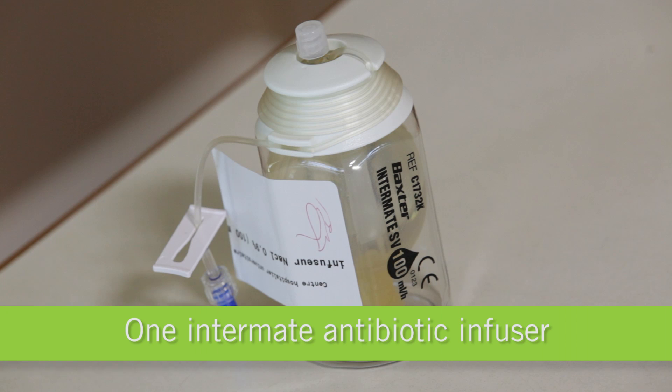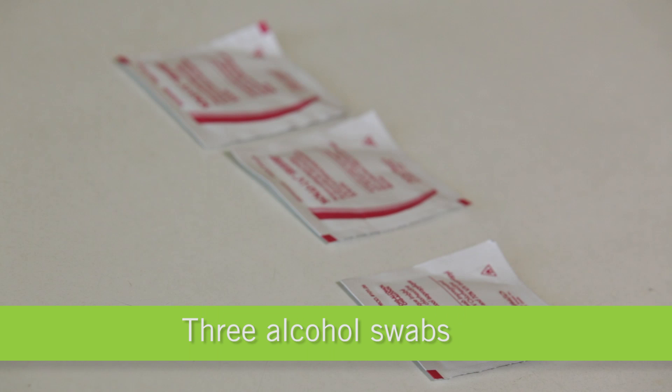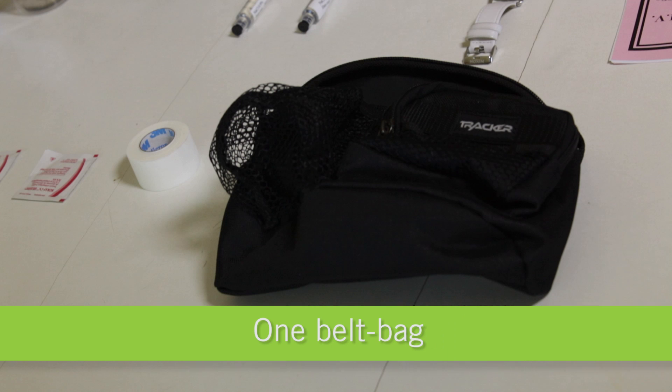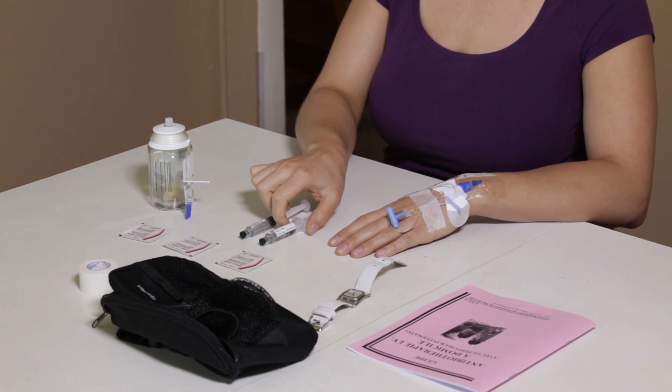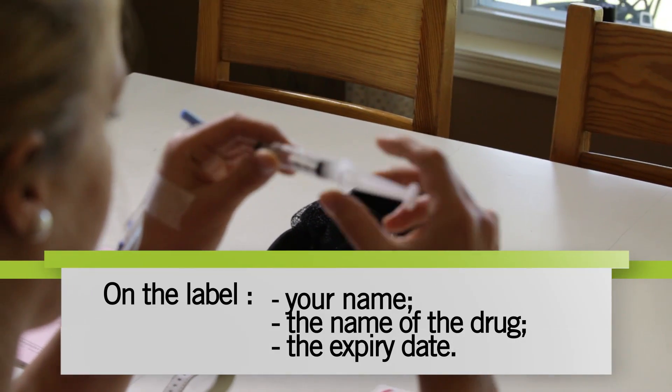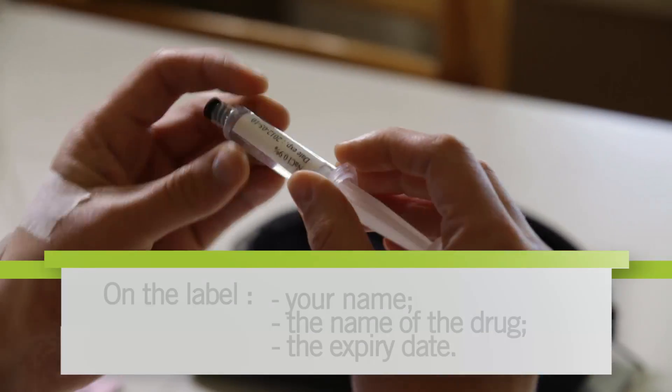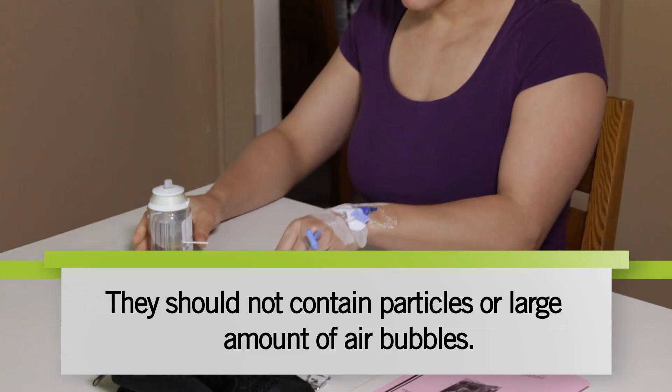You'll need one Intermate antibiotic infuser, two saline solution syringes (also referred to as NaCl and physiological serum), three alcohol swabs, tape, and one belt bag. Before administering the antibiotics, always check the label carefully to ensure it's correctly identified with your name and the name of the medication. Also check the expiry date—your medication must not be outdated.